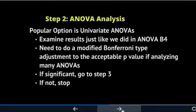In step two, the most popular option is to look at the univariate ANOVAs. Sometimes people don't do all of them, particularly if they don't have a research question relevant to all. You examine the results just like you've done in previous ANOVA training. If you have many analyses and are looking at lots of p-values in one dataset, you may need to do a Modified Bonferroni and adjust the p-value down — it might go to 0.04, 0.03, or even lower depending on how many analyses you are doing to try to avoid error.